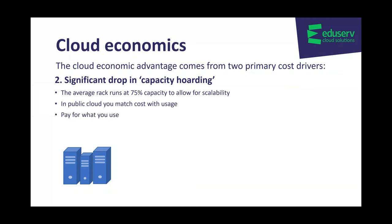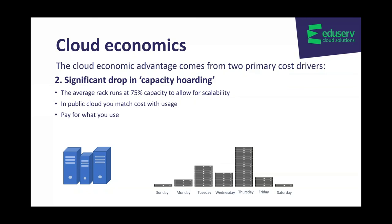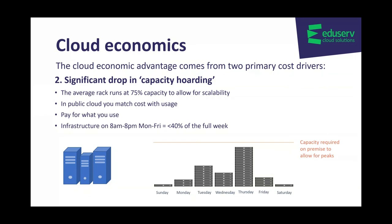Here's an example. If this was running in your own data center, you would run at the capacity of the orange line to allow for the peaks, and you would be investing based on estimated demand. Whereas in public cloud, if you were only using your infrastructure from 8am to late pm, Monday to Friday, that's less than 40% of the full week, so you would benefit from turning it off. You can elastically respond to loads in an agile manner. There are tools available to help you auto scale, adjusting capacity as needed based on configuration and auto scaling policies that you can set up within the cloud environments.